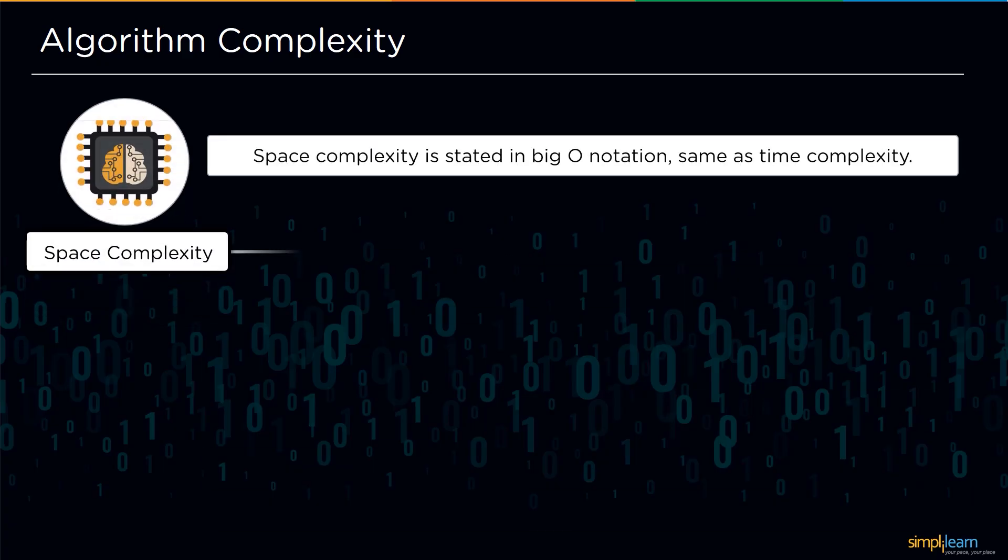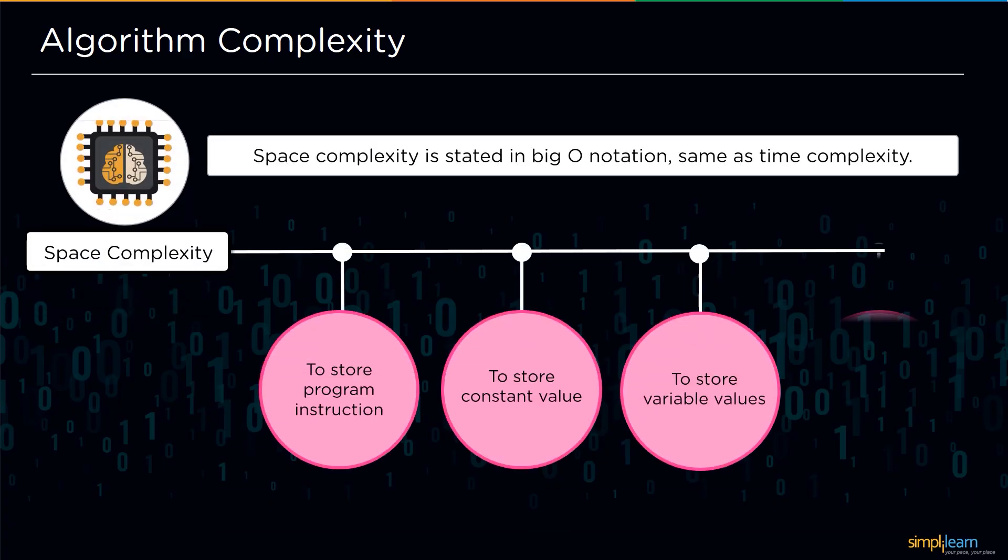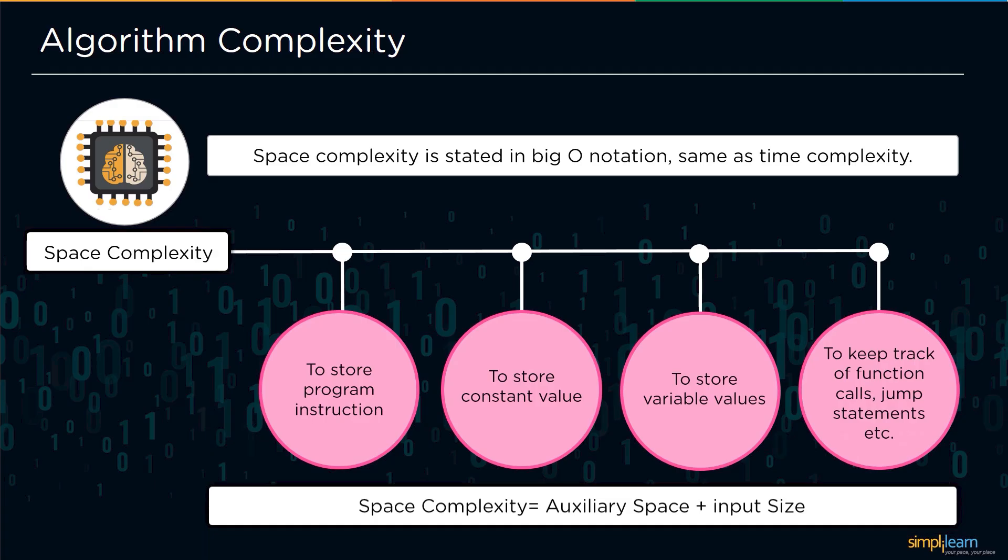Next we will discuss space complexity, which is expressed with big O notation just as time complexity. These four items are stored in space complexity: it initially saves program instructions, then stores constant values, then stores variable values, and finally it keeps track of function calls, jumping statements and so on. The sum of auxiliary space and input size is used to calculate space complexity. The extra space or temporary space used by an algorithm is referred to as auxiliary space.